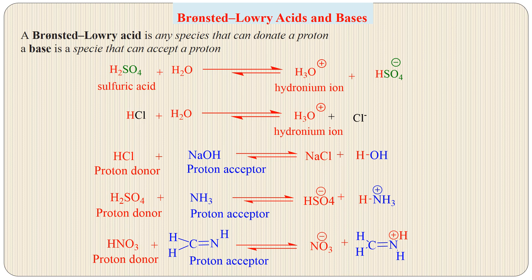The next concept is the Bronsted-Lowry concept of acids and bases. The Bronsted-Lowry definition of an acid is similar to the Arrhenius concept — any species that can donate a proton. But here the definition of a base is changed: a base is any species that can accept a proton. All acids in the Arrhenius concept are also acids in the Bronsted-Lowry concept. For example, H₂SO₄ and HCl in the presence of water give hydronium ion.